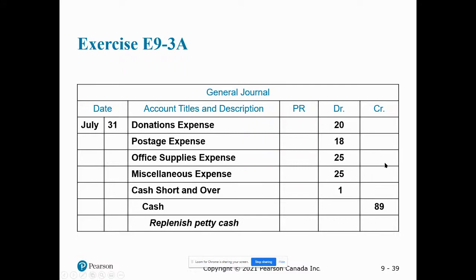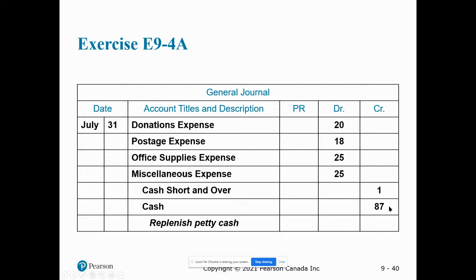Another example is exercise E9-3A, which builds on E9-2A where the actual cash on hand wasn't $90 — there was only $89 on hand, so more money is required to replenish the petty cash. And E9-4A also builds on E9-2A. The important thing to note in these examples: we're not posting to the petty cash account; we are posting to the cash account, because I have to go get cash out of the bank to put back into my petty cash box. When done, my petty cash box will say I have $100 in it — that's why we post from the cash account.